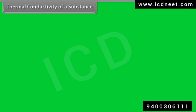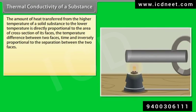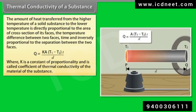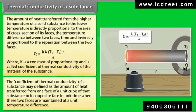Thermal conductivity of a substance: The amount of heat transferred is directly proportional to the area of cross-section, the temperature difference between two faces, and time, and inversely proportional to the separation between the two faces. It gives Q equals KA(T1 minus T2) times t upon d, where K is the coefficient of thermal conductivity. It is defined as the amount of heat transferred through a unit cube from one face to the opposite face in unit time when the two faces are maintained at a unit temperature difference.